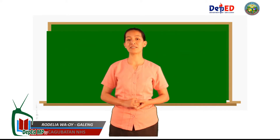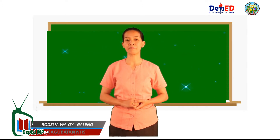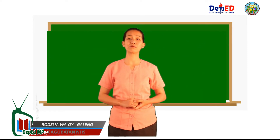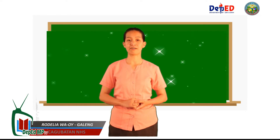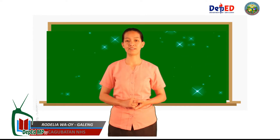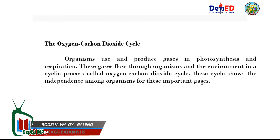Our previous topic is about the materials in the ecosystem that cycle constantly. This cycling of materials includes the oxygen-carbon dioxide cycle, the water cycle, and the nitrogen cycle. In the oxygen-carbon dioxide cycle, organisms use and produce gases in photosynthesis and respiration. These gases flow through organisms and the environment in a cyclic process called the oxygen-carbon dioxide cycle. This cycle shows the interdependence among organisms for these important gases.